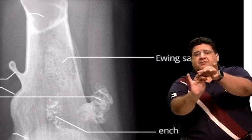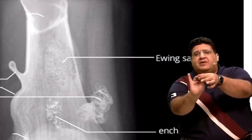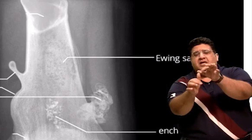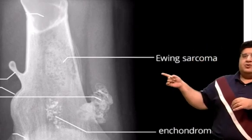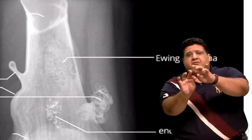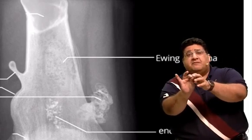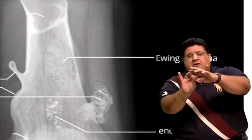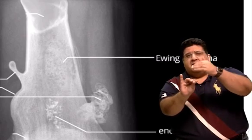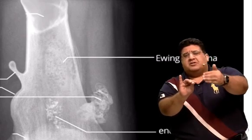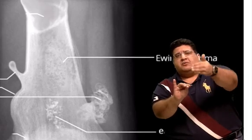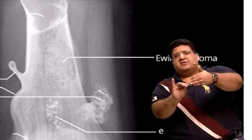Ewing's sarcoma: age group 5 to 15 years, most common primary malignant bone tumor of the first decade of life. Initially presents with pain, swelling, along with fever — very closely mimics osteomyelitis. X-ray will show onion peel appearance, usually seen in diaphysis. Most common bone is the femur. MRI gives an idea, but biopsy is the gold standard.